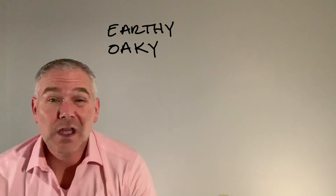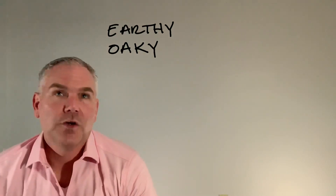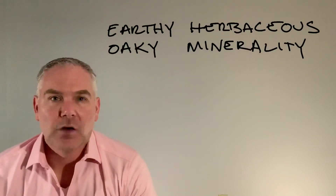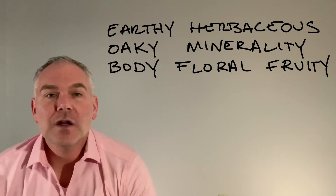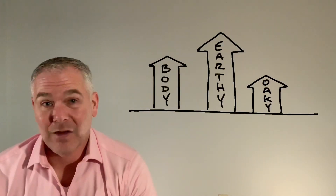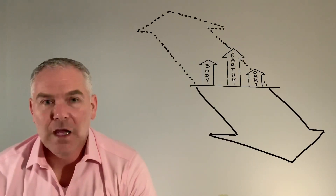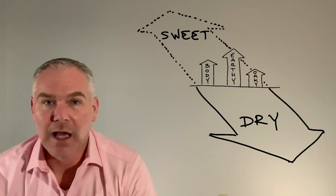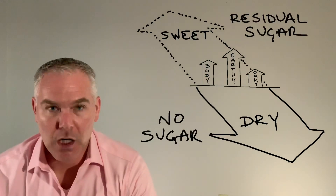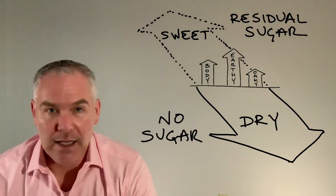All of the other subjective descriptors — like whether a wine is earthy or oaky, shows minerality, or has a really full body — those are very different. Those are on a different axis altogether. We're talking about dry versus sweet. Dry has no sugar. Sweet does. That's it.